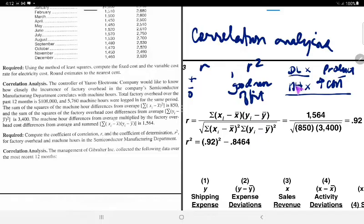So pag let's say ang naging result ay point 70, kasi 70% of the changes is contributed by direct labor or machine hour. So the result ng R square will be either from zero to one.